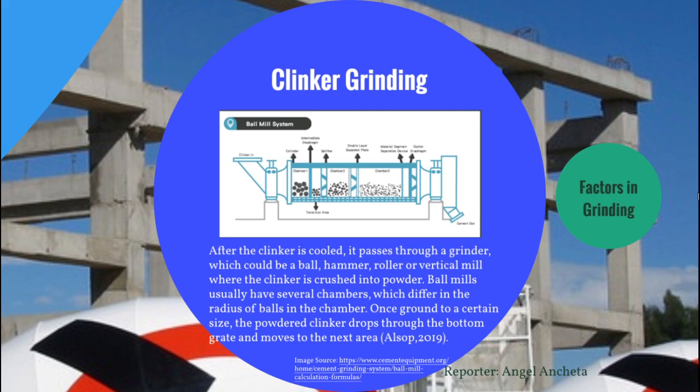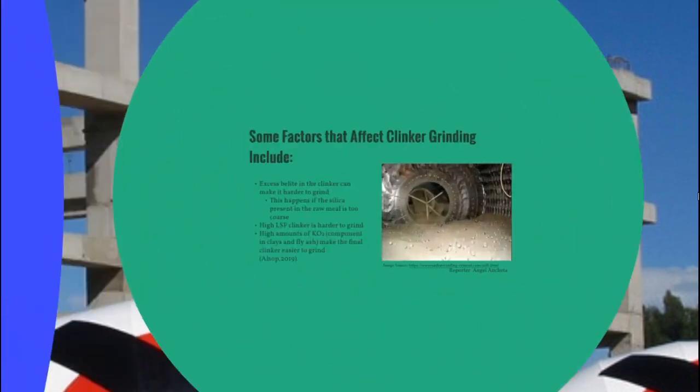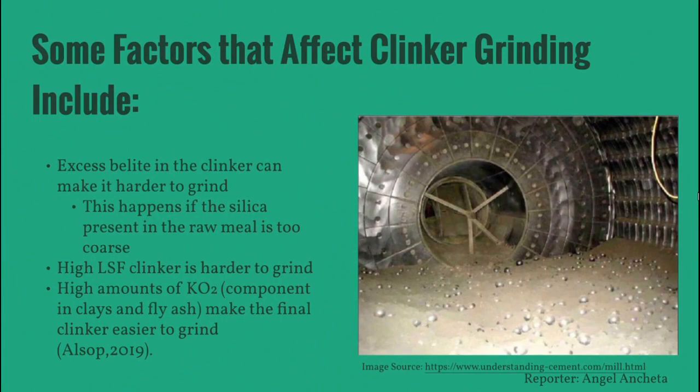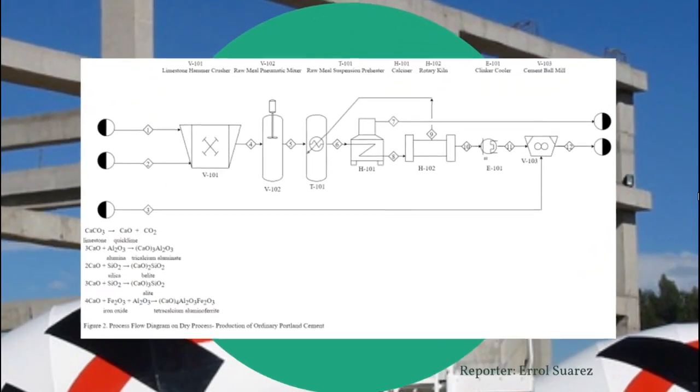Ball mills usually have several chambers which differ in the radius of balls in each chamber. Once the clinker is ground to a certain size, it drops through the bottom grate and moves to the next area. Some factors that can affect clinker grinding include excess belite and high LSF, which make the clinker harder to grind. On the other hand, high amounts of K2O — the compound in clays and fly ash — make the final clinker easier to grind.